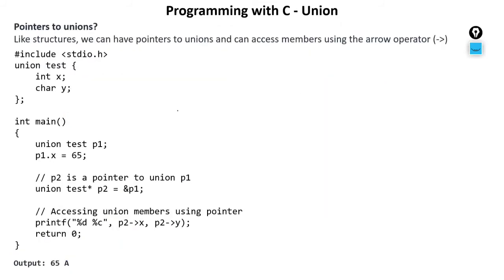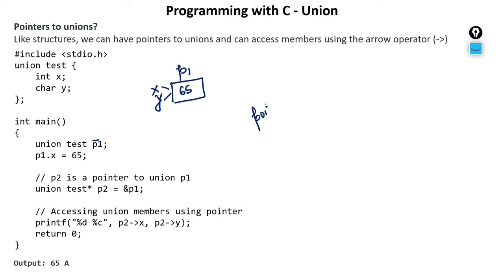Let's see another example. Here we have created a union by the name of 'test' having two members: x which is an integer and y which is a character. In main, we have created a variable p1, which is shared by both x and y. I'm initializing it through dot operator: p dot x is equal to 65, so this location will have the value 65.